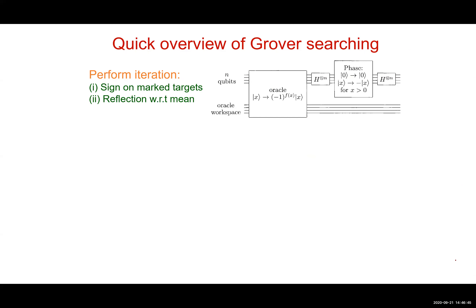A circuit involving non-Clifford gates may not necessarily be simulated efficiently on a classical computer. This is important in order to have a quantum computer that potentially has some advantage. But this is just to bring to your awareness that there is such a restriction — that certain subclasses of circuits are not necessarily useful. Next, I'm going to talk about Grover's search algorithm.